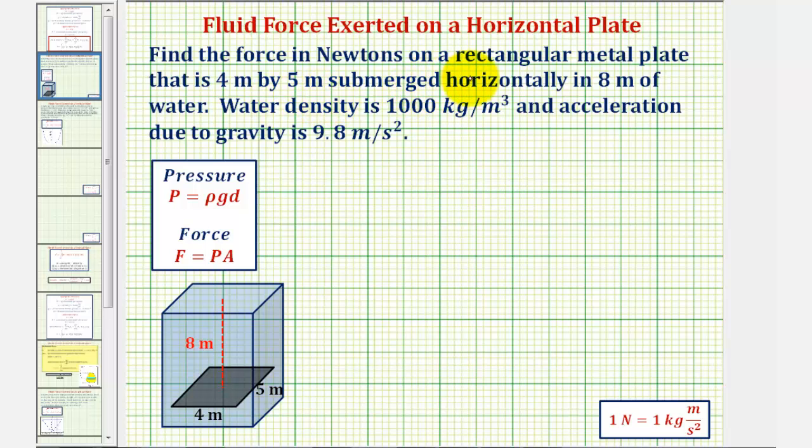We want to find the force in newtons on a rectangular metal plate that is four meters by five meters submerged horizontally in eight meters of water. We're given the water density is 1,000 kilograms per meters cubed, and acceleration due to gravity is 9.8 meters per second squared.